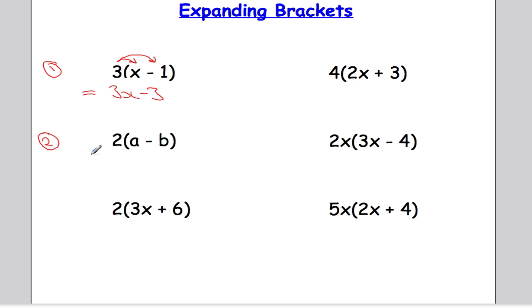Let's have a look at question 2. We've got 2 bracket a minus b. So we're going to take the 2 and multiply it by the a and then take the 2 and multiply it by the negative b. So 2 times a is 2a and then 2 times negative b. We have to get our signs right here. The number 2 is positive, the b is negative and a positive times a negative is always negative. So 2 times b is negative 2b. Job done.